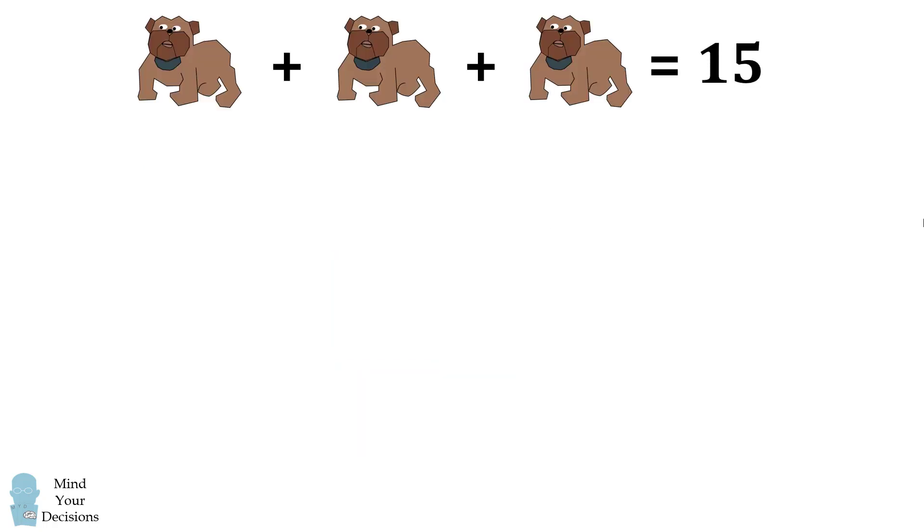The first equation is that three bulldogs equal fifteen. That would mean we divide by three and we get a single bulldog is equal to five.